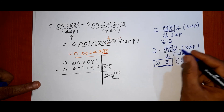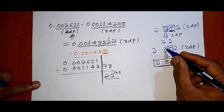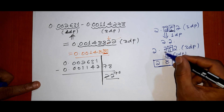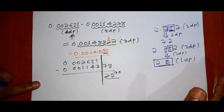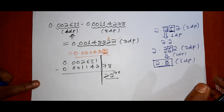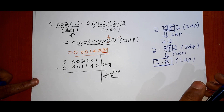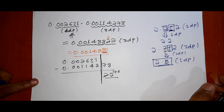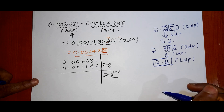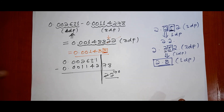So if the digit before five is odd, we increase it by one to make it even — that is the nearest even number rule. Thank you for watching this example on significant figures.